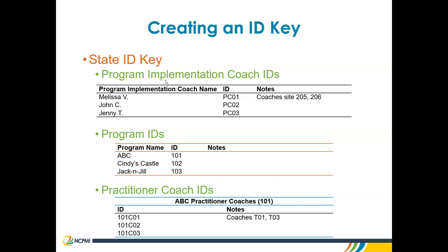Here is a couple of examples. This is a state ID key. I've created IDs for the program implementation coach. At the state level, you would have a table with coach names along with an ID. In this example, I've used the letters PC for program coach and then two digits for each coach — 01, 02, 03. If I get a new program implementation coach, their ID would follow with the next two-digit number, so PC04. I also like to include notes on my keys to keep track of data — for example, which sites a coach is assigned to, like sites 205 and 206.